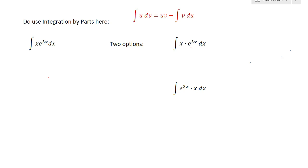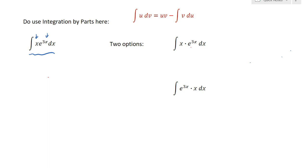Now let's look at an example where we should use integration by parts: the integral of x times e to the 3x dx. This is similar to the previous example, but there is no degree separation between the polynomial and the exponent, so u-substitution won't work. Since multiplication is commutative, we have two options: let u equal x and dv equal e to the 3x dx, or the other way around.